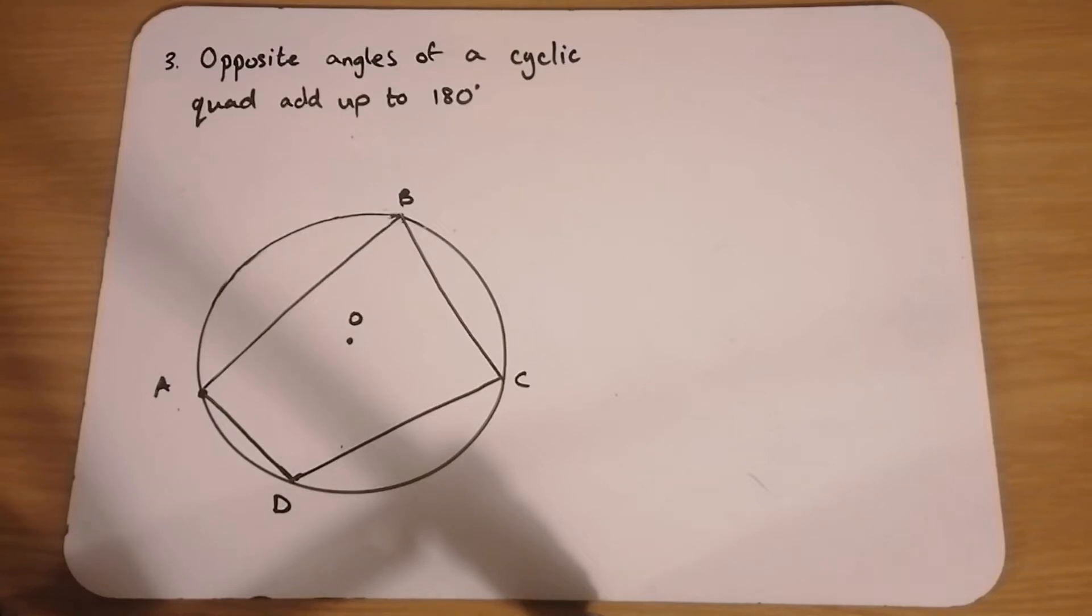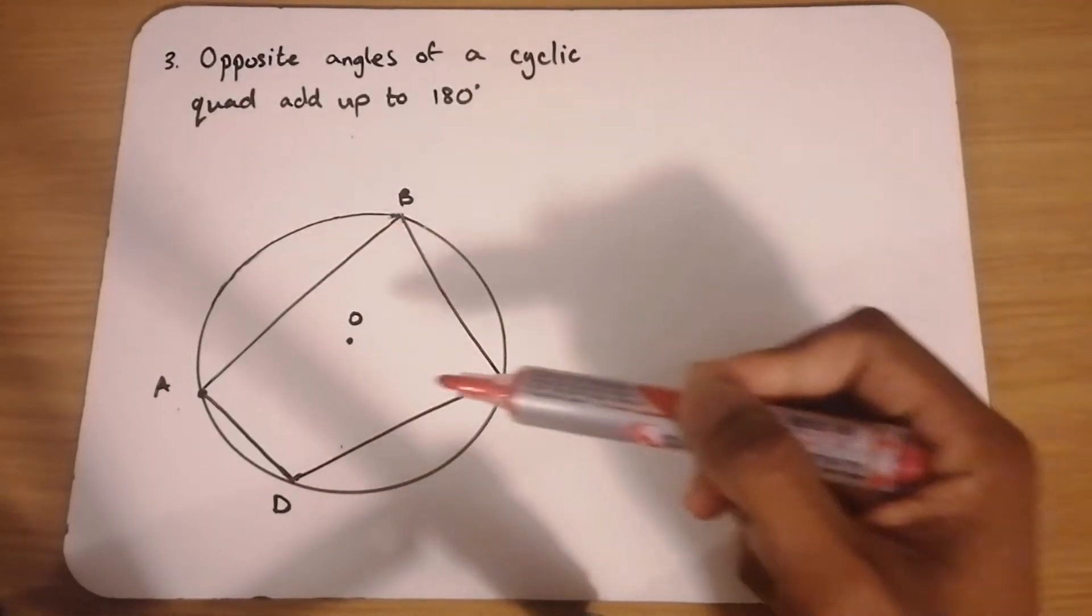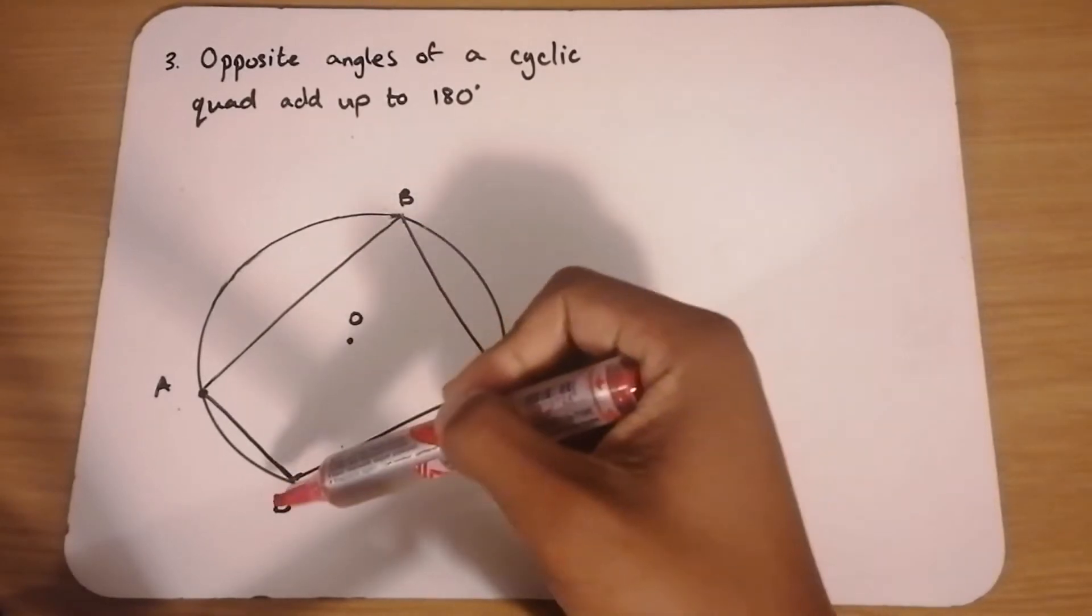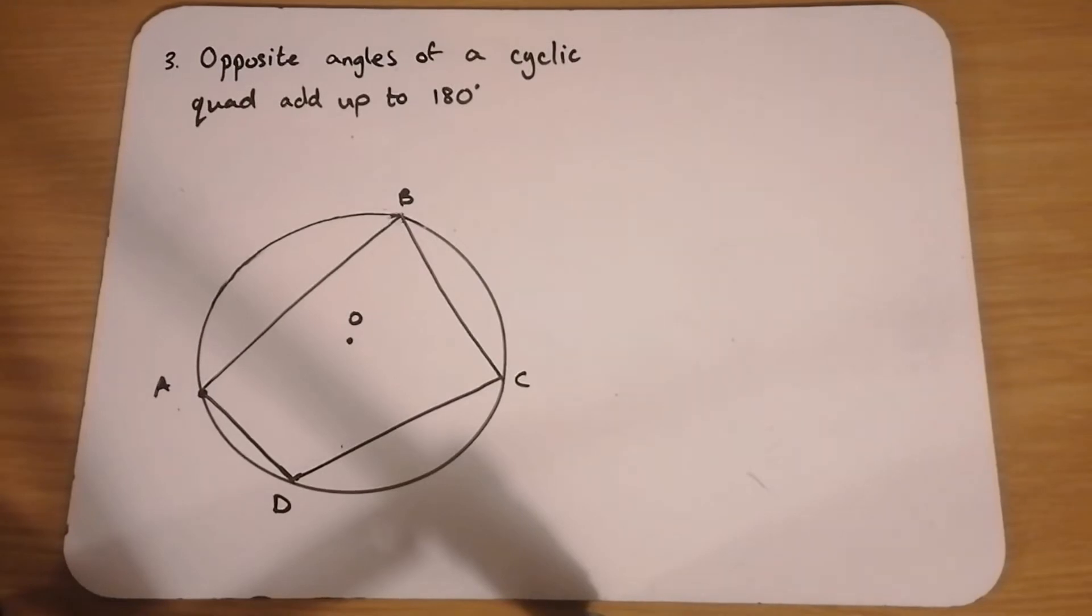Formal proof number 3. Opposite angles of a cyclic quad add up to 180 degrees. Here we have to prove that a pair of opposite sides like angle B plus D should add up to 180 and A and C should also add up to 180.